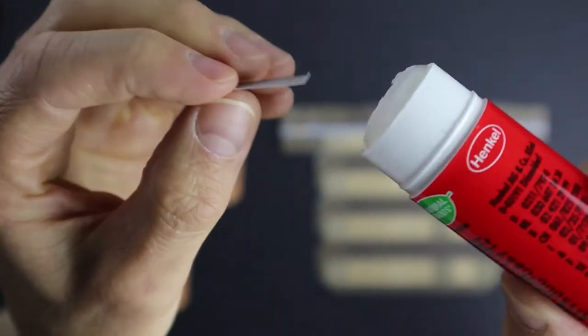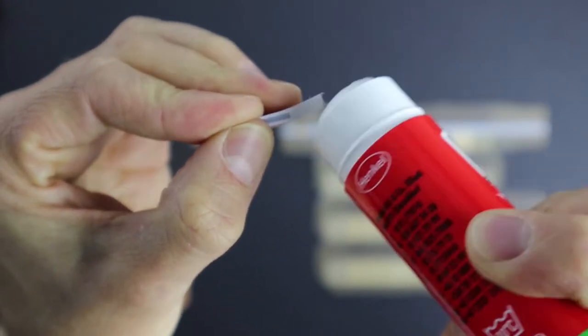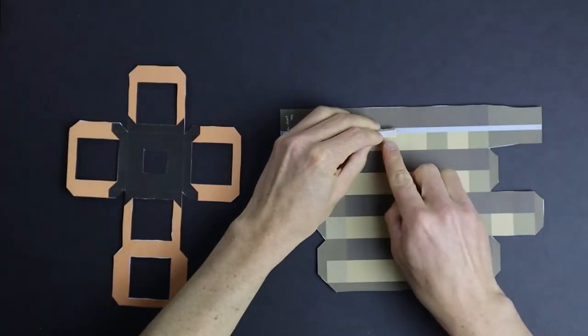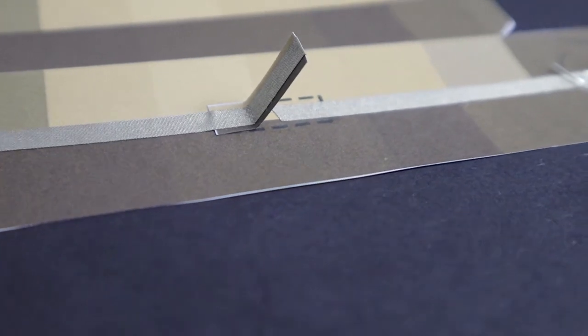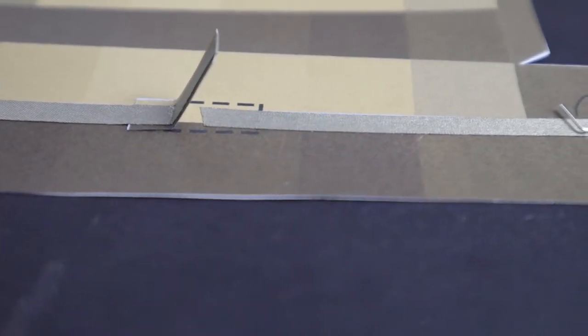After that, we glue our little on-off switch to the handle where marked. Put glue on half of it and glue it in place. Fold and bend the loose end upwards. This self-made little switch will later close and open our circuit.